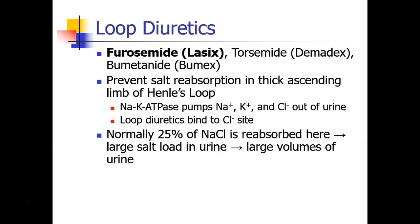These drugs all work in the same way. They prevent reabsorption of sodium in the thick ascending limb of Henle's loop, which is one of the anatomic structures we saw in the diagram of the renal tubule. In that part of the nephron, there are sodium-potassium ATPase pumps which pump sodium, potassium, and chloride out of the urine, and the loop diuretics probably bind to the chloride site. About 25% of the sodium and chloride that is reabsorbed from the kidney is reabsorbed at this site.